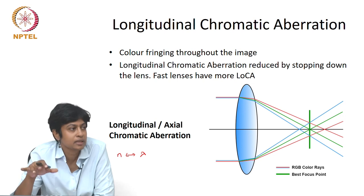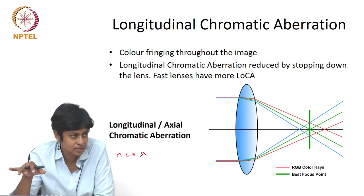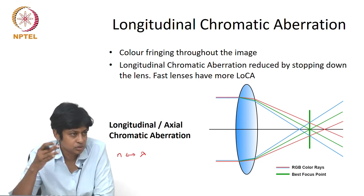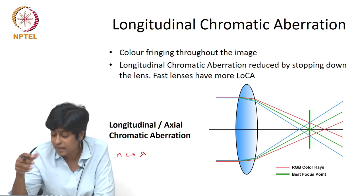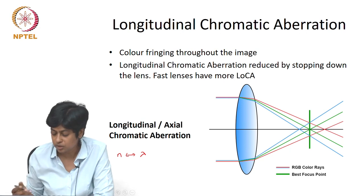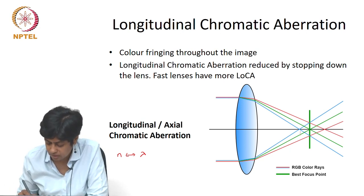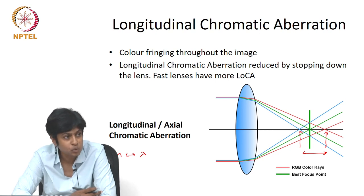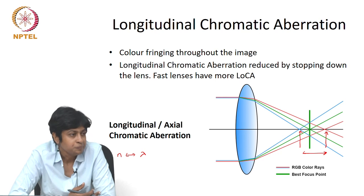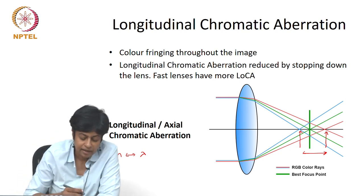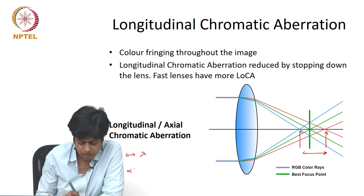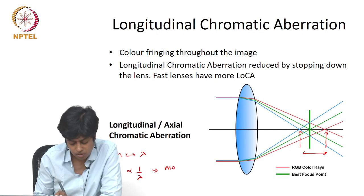For a positive lens, the lower wavelengths tend to focus closer to the lens than the longer wavelengths, giving you a spread along the optical axis. The blue is focused closer, the red is focused further. Why does this arise? It is because most optical materials have n and lambda inversely related — n is inversely related to lambda for most optical materials.